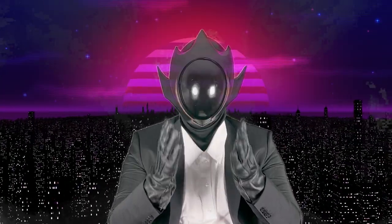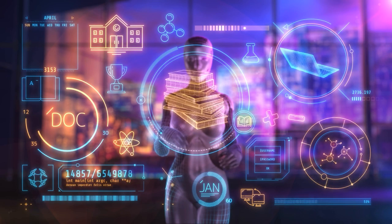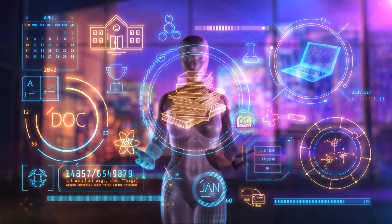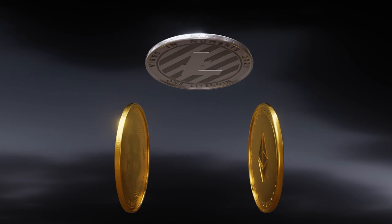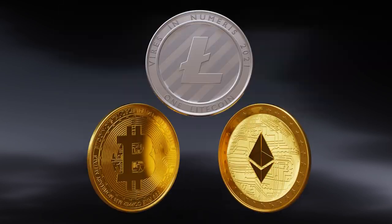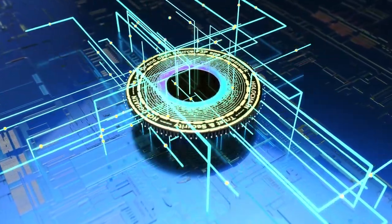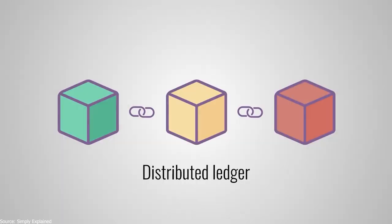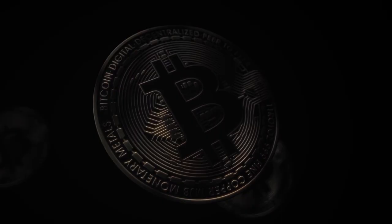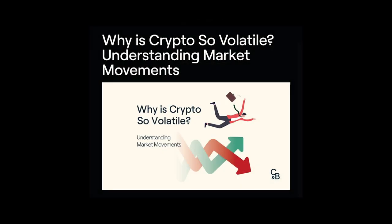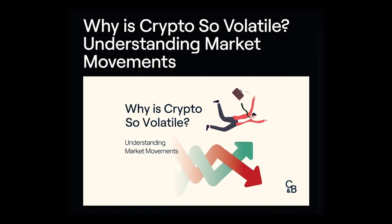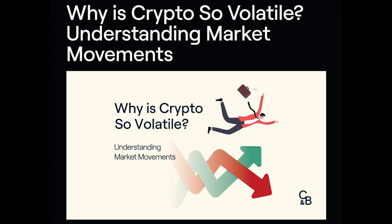As we venture into the future of money, innovation and technology are rewriting the rules of finance. Cryptocurrencies like Bitcoin and Ethereum are at the forefront, leveraging blockchain technology for secure and decentralized transactions. The blockchain offers a transparent, tamper-proof ledger — it's not just a trend, it's a technology that could revolutionize how we view money. But cryptocurrencies come with challenges: volatility, regulatory issues, and adoption hurdles.